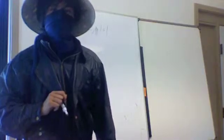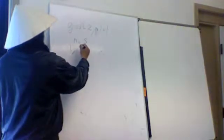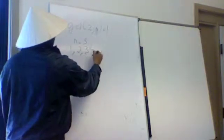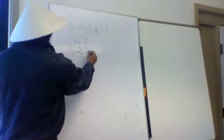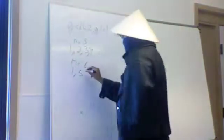So consider all elements relatively prime to n. For example, if n equals 5, 1 is relatively prime to 5, 2, 3, and 4. Or, if n equals 6, it will be 1 and 5. So there you go.